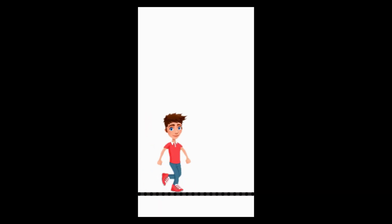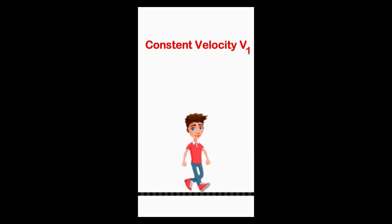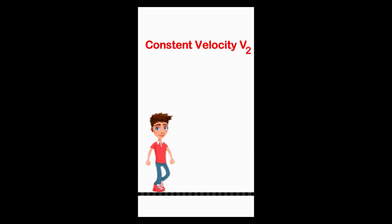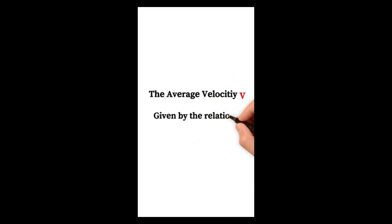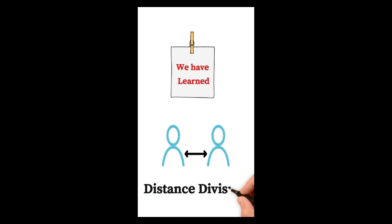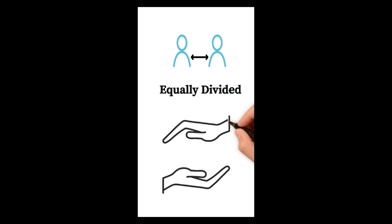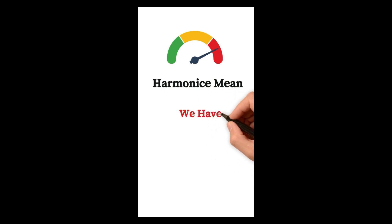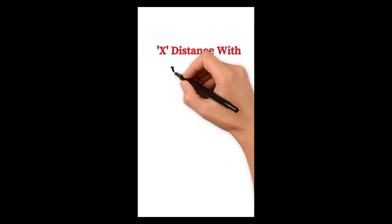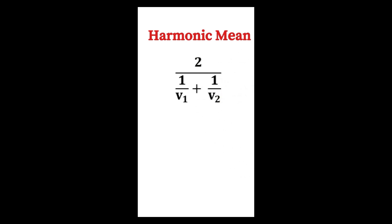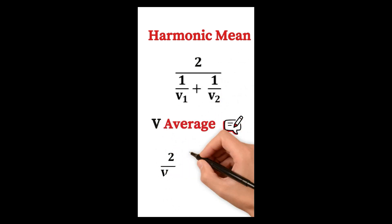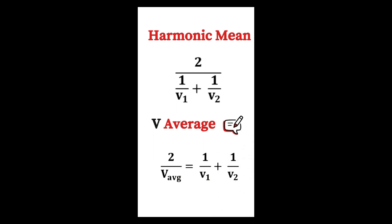A person traveling in a straight line moves with a constant velocity v1 for a certain distance and with a constant velocity v2 for the next equal distance. We use the distance division method: when distance is equally divided, average velocity is the harmonic mean. So v_average equals 2 divided by (1/v1 + 1/v2).